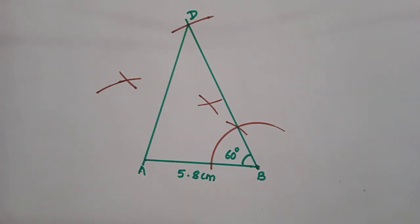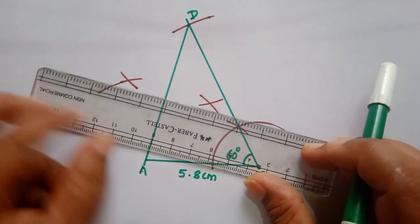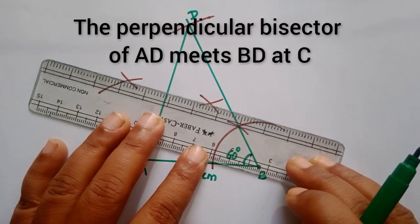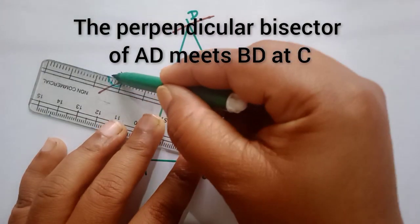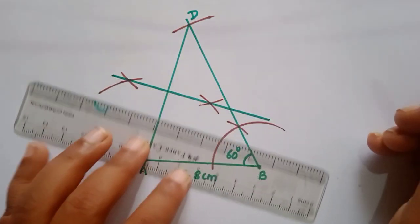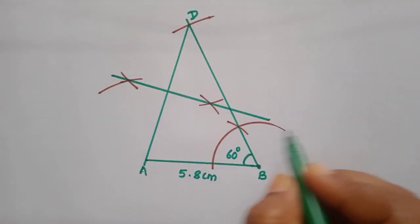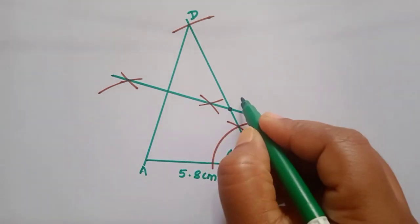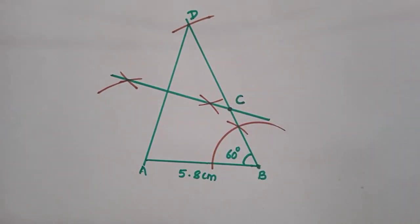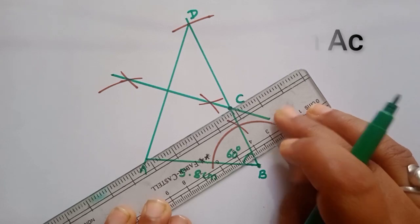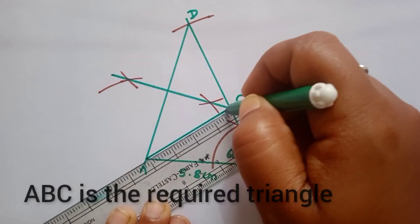Now you can see the perpendicular bisector. Join the line. This perpendicular bisector touches BD at a point — name it as C. Now join AC.